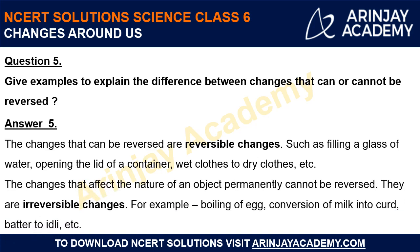The changes that affect the nature of an object permanently cannot be reversed — these are called irreversible changes. For example, boiling of an egg: once you have boiled the egg, you cannot get back to the initial egg. Conversion of milk into curd: if your milk has turned into curd, you cannot get back to milk. Batter to idli: if you have used batter to prepare idli, you cannot get back to the batter again. Such changes where the nature of the object has permanently changed are called irreversible changes.